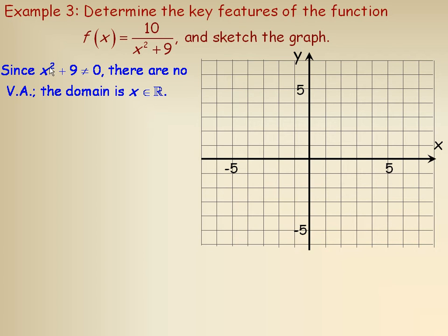If I want to try to solve for x here, I would subtract 9 from both sides, and so I would get x squared cannot equal negative 9, and you can't take the square root in the real numbers of a negative, so there are no values that make that denominator equal to zero. So there's no vertical asymptotes. The domain is the entire set of real numbers.